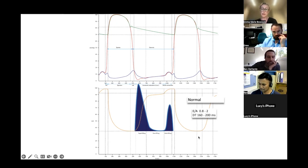Normal values are an E to A ratio - this is our E-wave and our A-wave - a normal E to A ratio would be between 0.8 and 2.